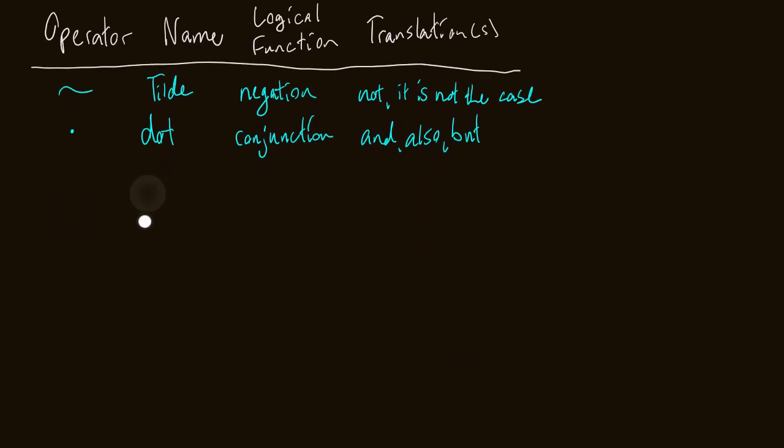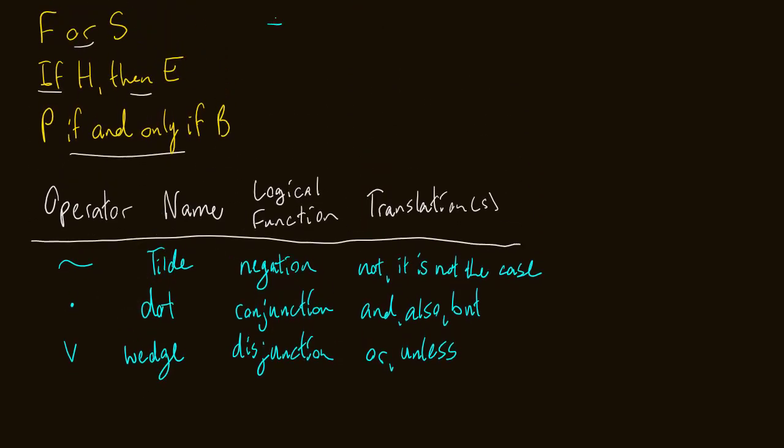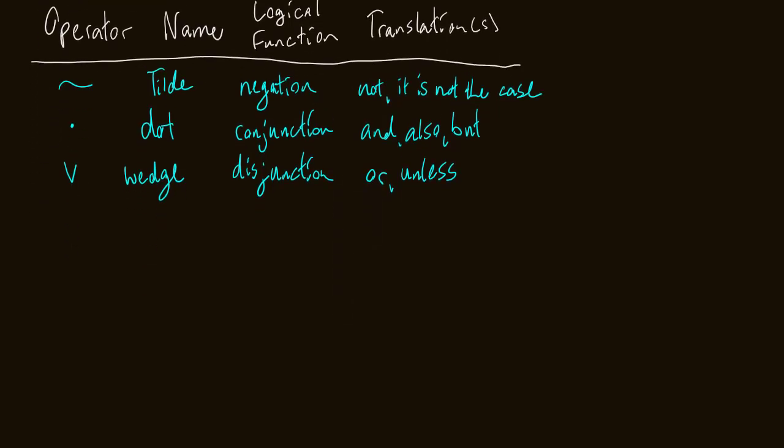Alright, what's the next thing we're going to do? The next operator is our wedge. And what is its logical function? Disjunction. And so we use this when we want to translate stuff like or, and unless. So I have F or S, that will just become F wedge S. Kind of looks like a V, right? I mean, it looks exactly like a V. But it's not, it's a wedge.